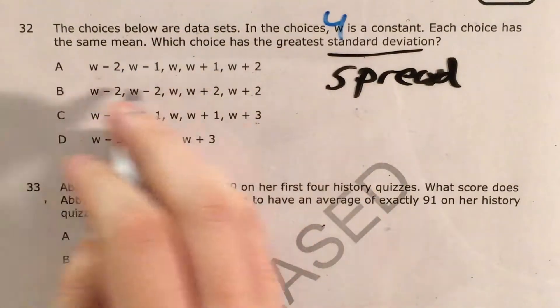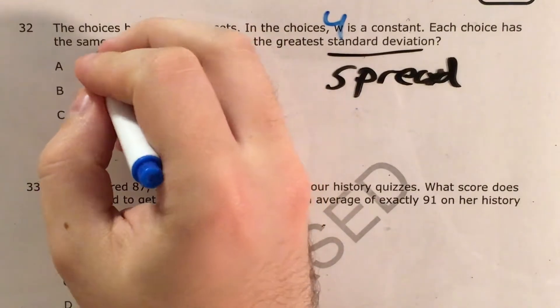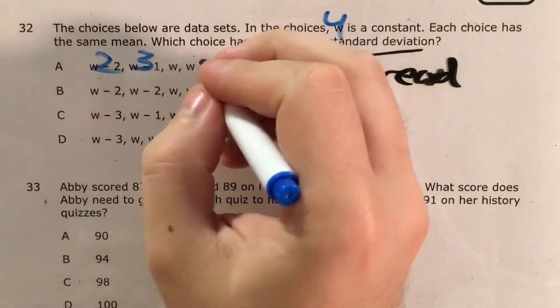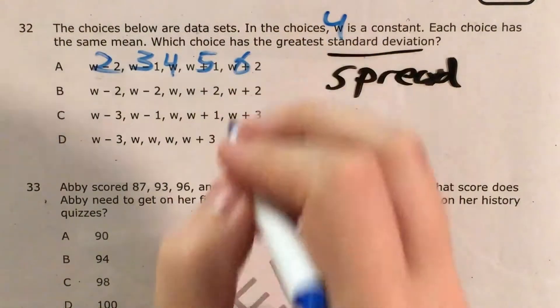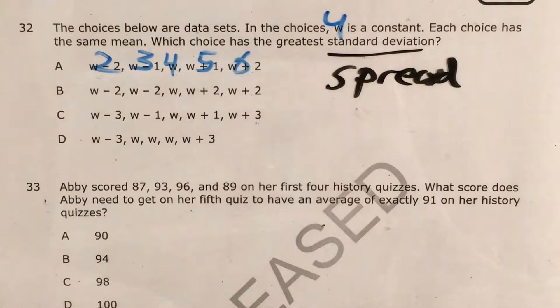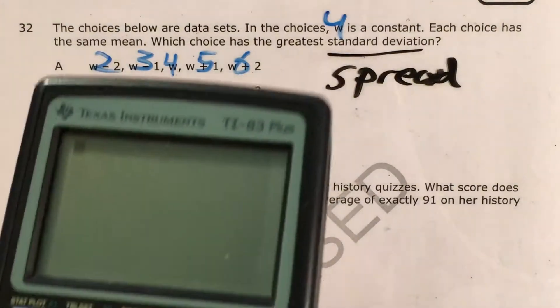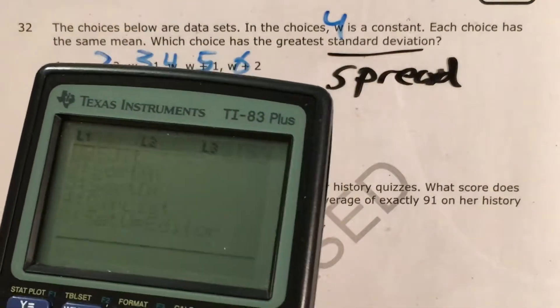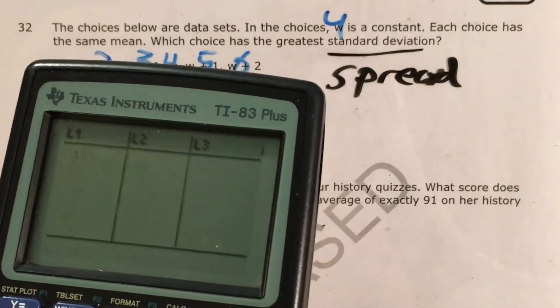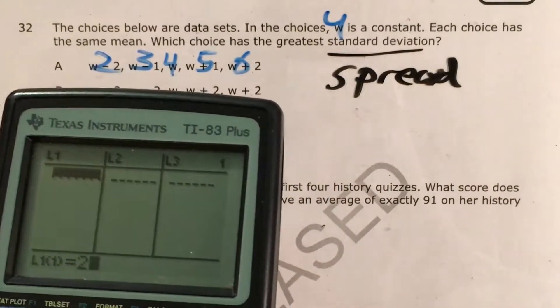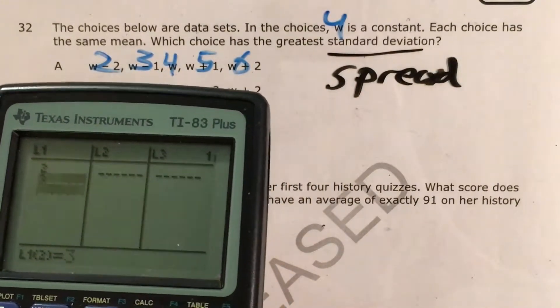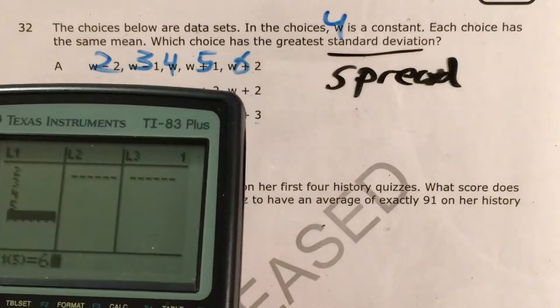Which means that if I'm going to plug in a number for each of these, choice A, 4 minus 2 is 2, 4 minus 1 is 3, 4 is just 4, 4 plus 1 is 5, and 4 plus 2 is 6. So if I'm going to test this and try to figure out its standard deviation, I go to stat, edit, I clear out everything I had before, and I just type in 2, 3, 4, 5, and 6.